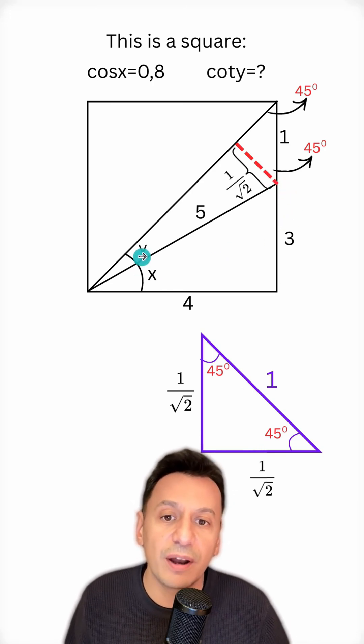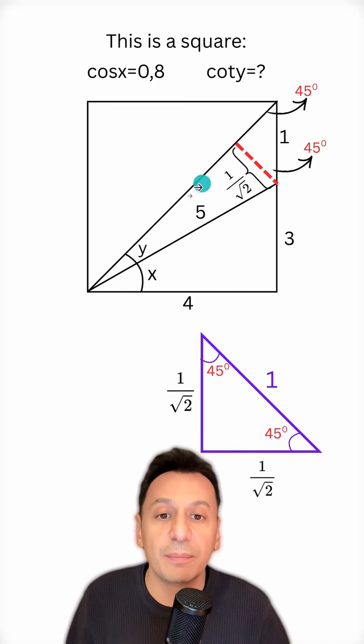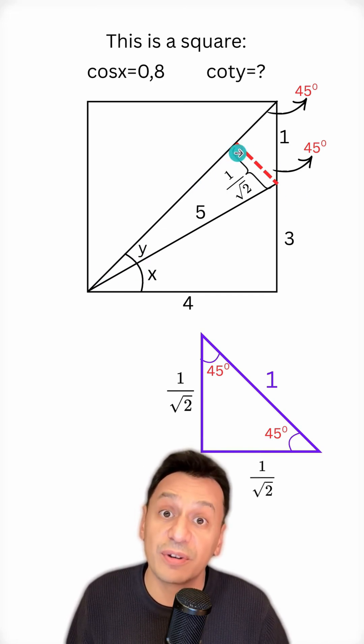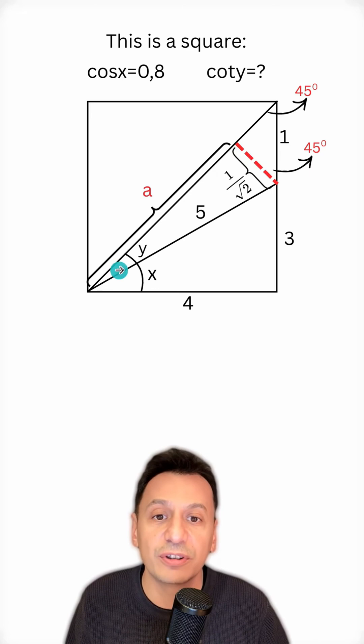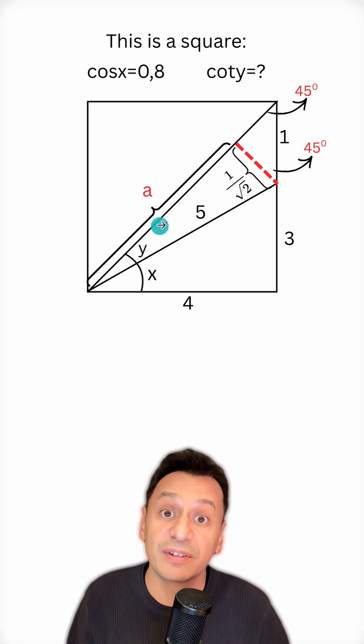Now to find cotangent y, all I need to do is find the length of this side. So, I'll apply the Pythagorean theorem to this right triangle here. If I call this side here a, let's now write out our Pythagorean theorem.